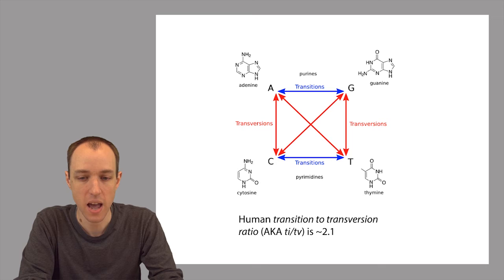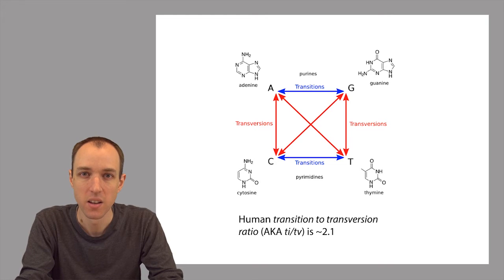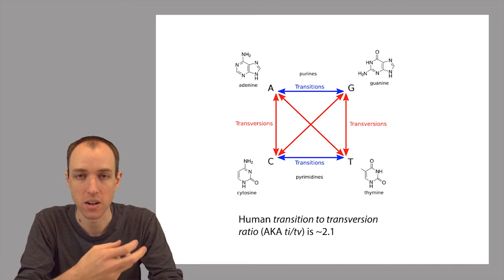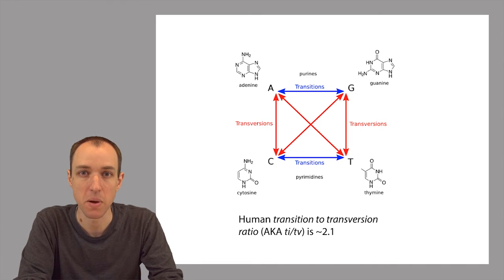But it turns out that, in reality, if you look at the substitutions that differentiate the genomes of two unrelated humans, actually transitions are about twice as frequent as transversions. So it's the other way around from what you would expect. So if transitions are so much more frequent than transversions, it seems like in our substitution penalty scheme, we might want to penalize the transversions more than we penalize the transitions.